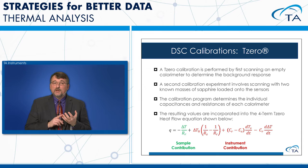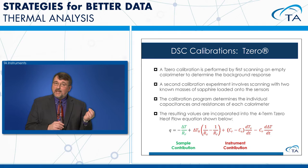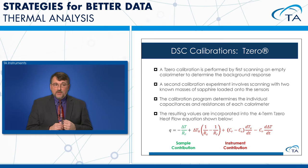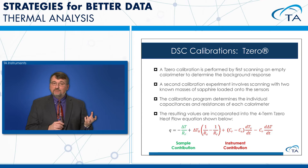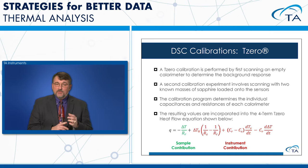The T0 calibration is performed in two steps. First, we scan the empty calorimeter. Second, we run a known weight of sapphire to measure the heat flow of the sapphire and sensors. Those values are entered into the four-term heat flow equation: the first term is the sample contribution — delta T divided by resistance — and the other three terms are instrument contributions.